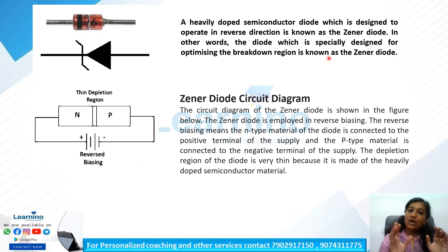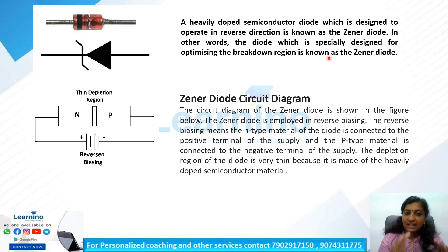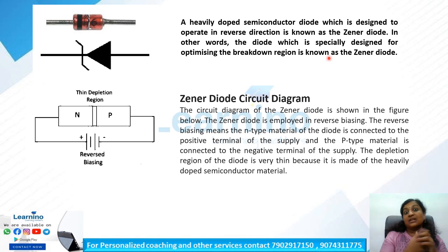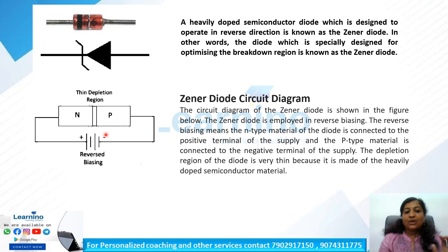The Zener Diode is specially designed for optimizing the breakdown region. It is not a normal diode — it is a specially designed diode used in a circuit with a thin depletion region.